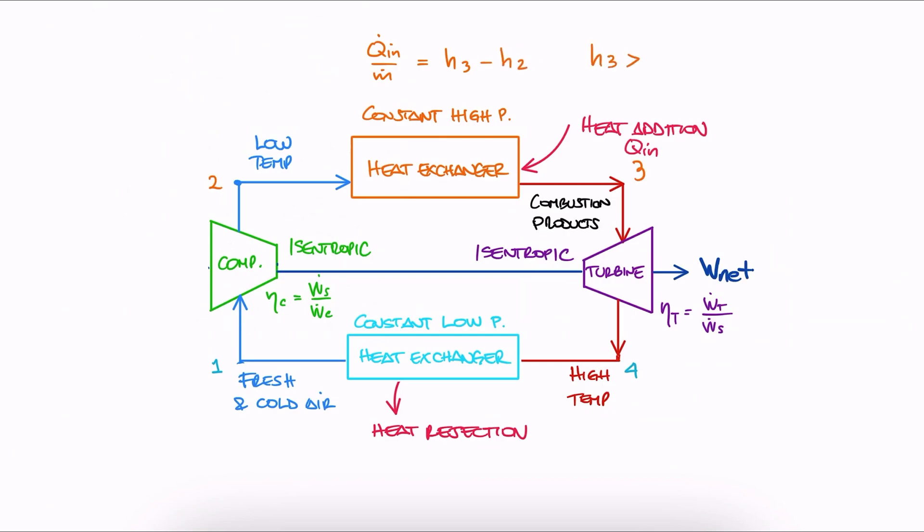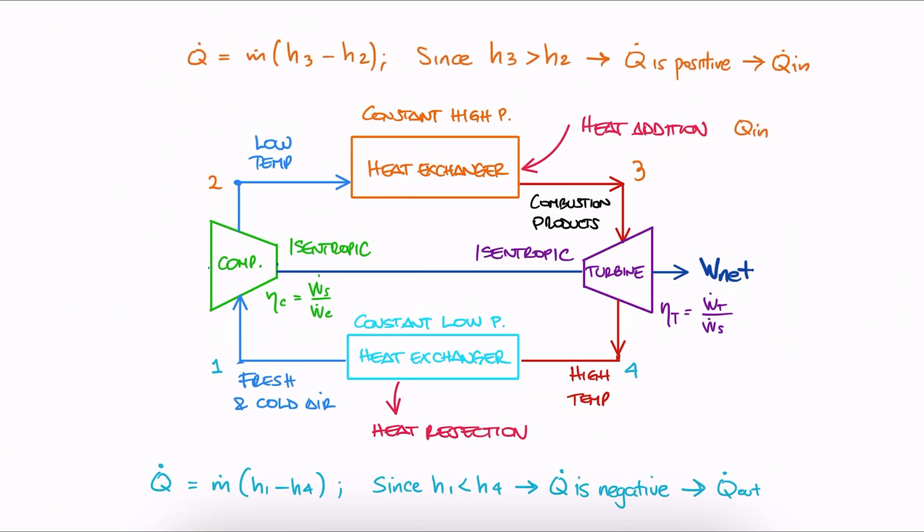The q dot term for the heat exchanger between 2 and 3 would be positive, since h3 is greater than h2, and the q dot term for the heat exchanger between 4 and 1 would be negative, since h1 is less than h4. This is consistent because we expect heat going in between 2 and 3, and heat going out between 4 and 1.